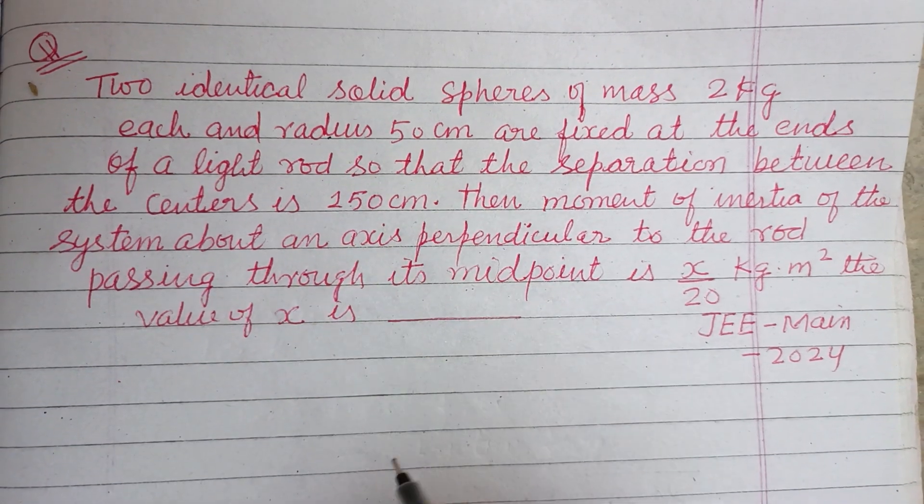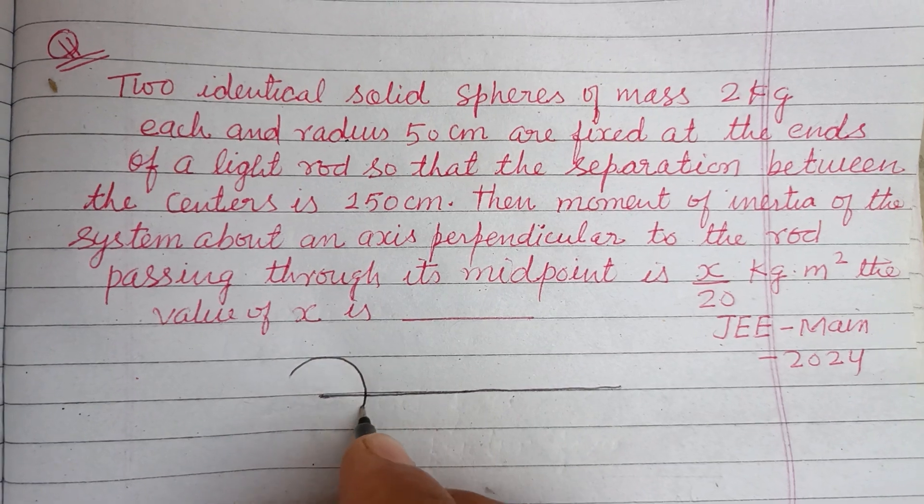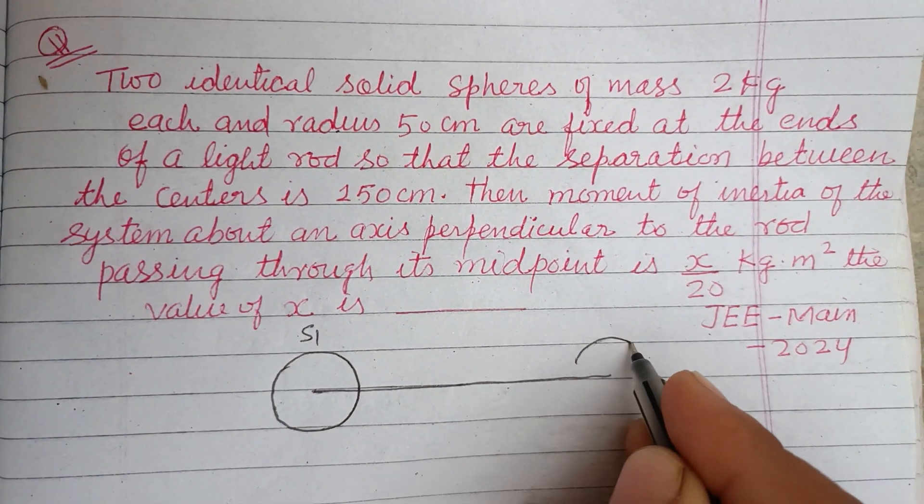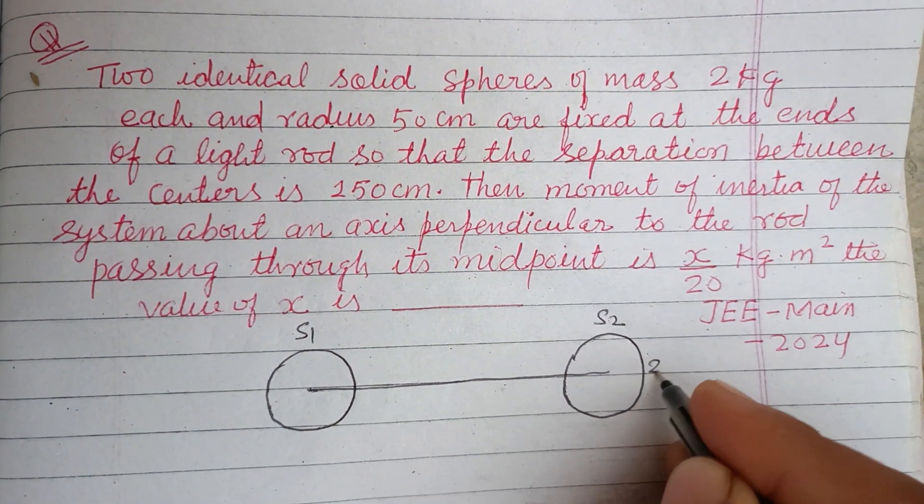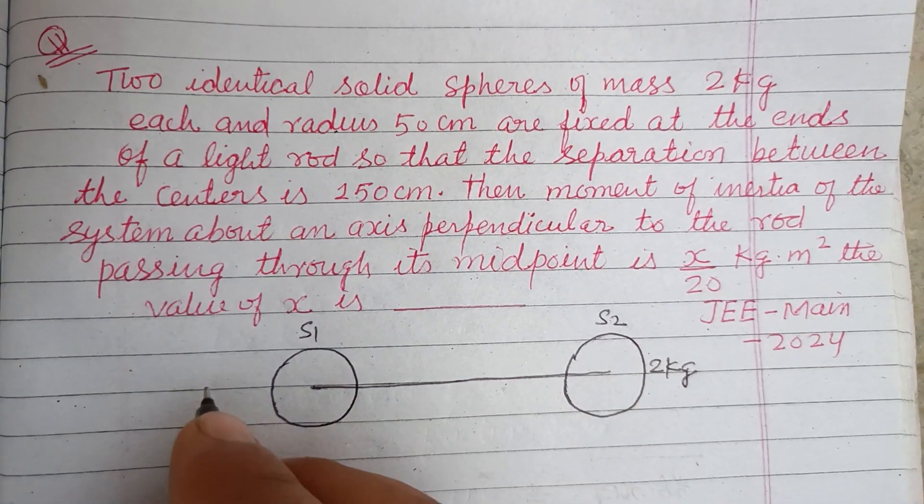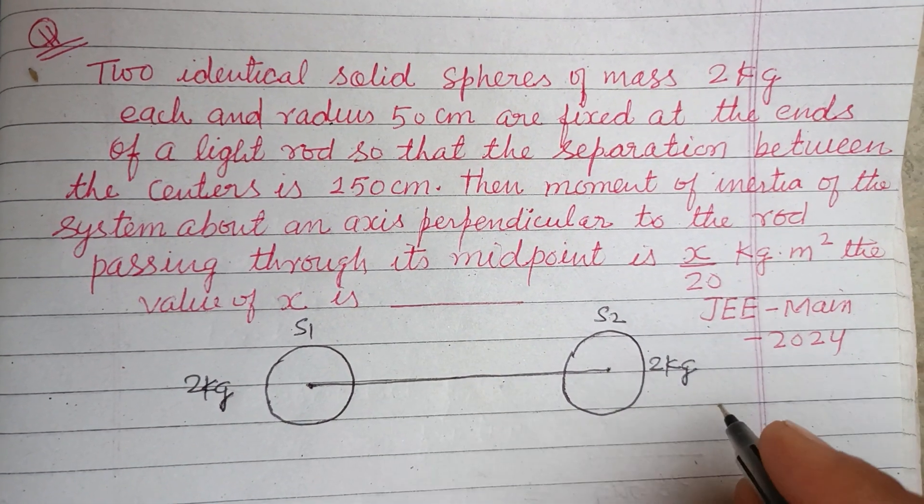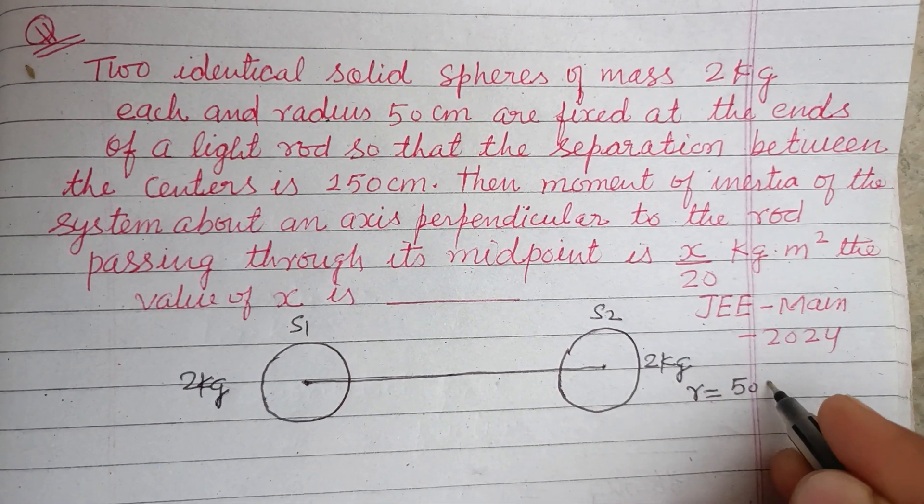So we make here a light rod, and this is the first sphere S1, this is the second sphere S2, each of 2 kilogram mass.